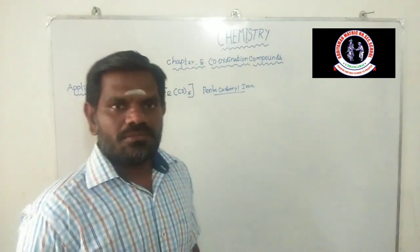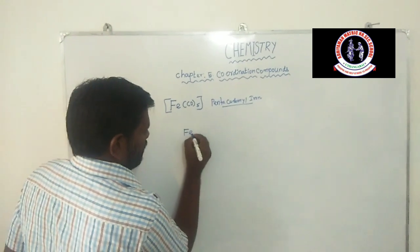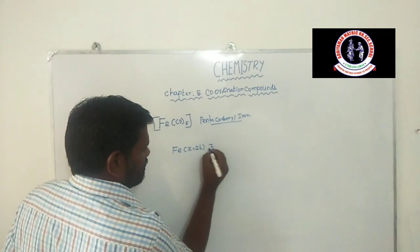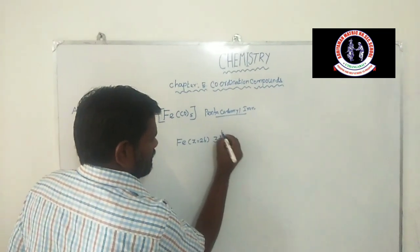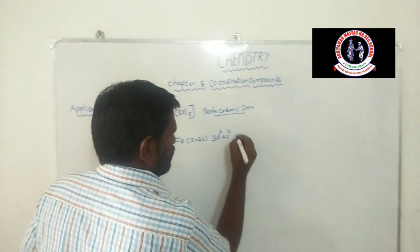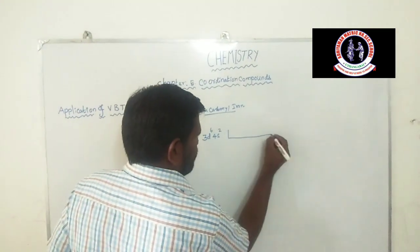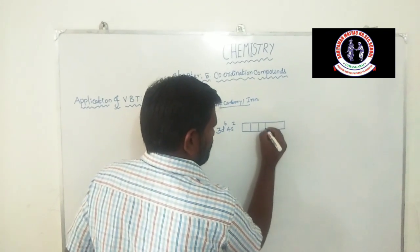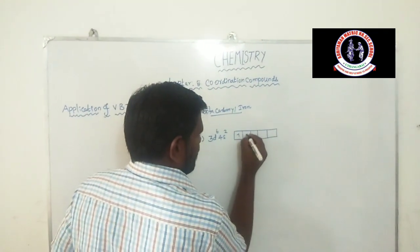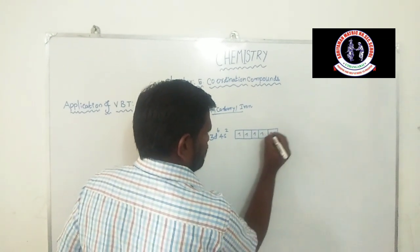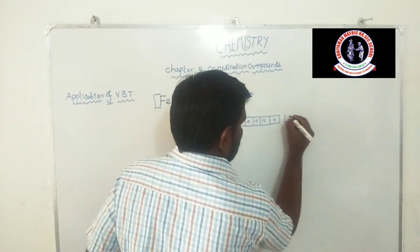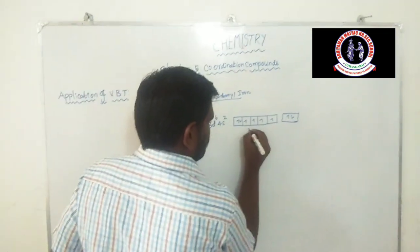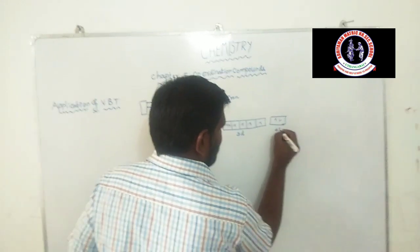The central metal atom is iron. Atomic number is 26. The electron configuration is 3d6 4s2. In the 3d subshell, 6 electrons are present, and 4s has 2 electrons.